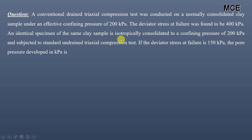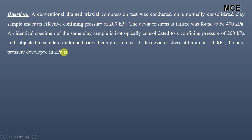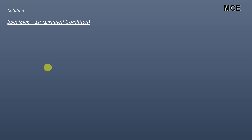An identical specimen of the same clay sample is isotropically consolidated to a confining pressure of 200 kilopascal and is subjected to a standard undrained triaxial compression test. If the deviator stress at failure is 150 kilopascal, we have to find the pore pressure developed in this undrained triaxial compression test.